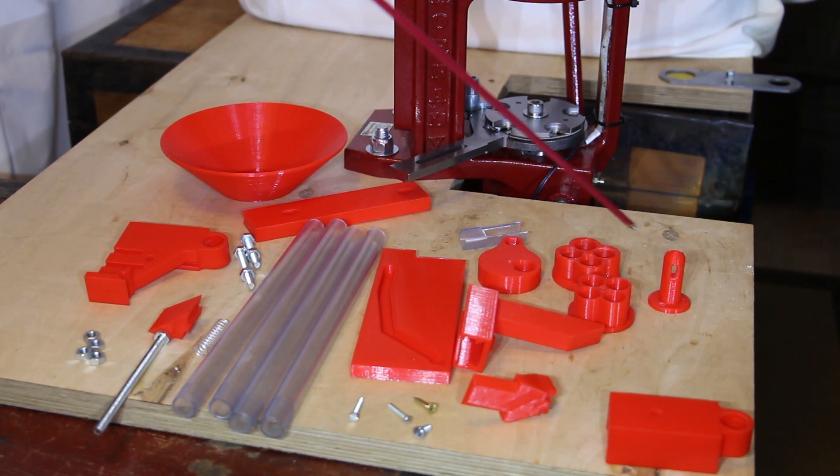You will need the 3D printed parts, some screws you should have at home, a special M6x100 screw with nuts fitting the threading, two springs, and some plastic tubes with an outer diameter of 16 millimeters. A detailed list is shown in the description below.